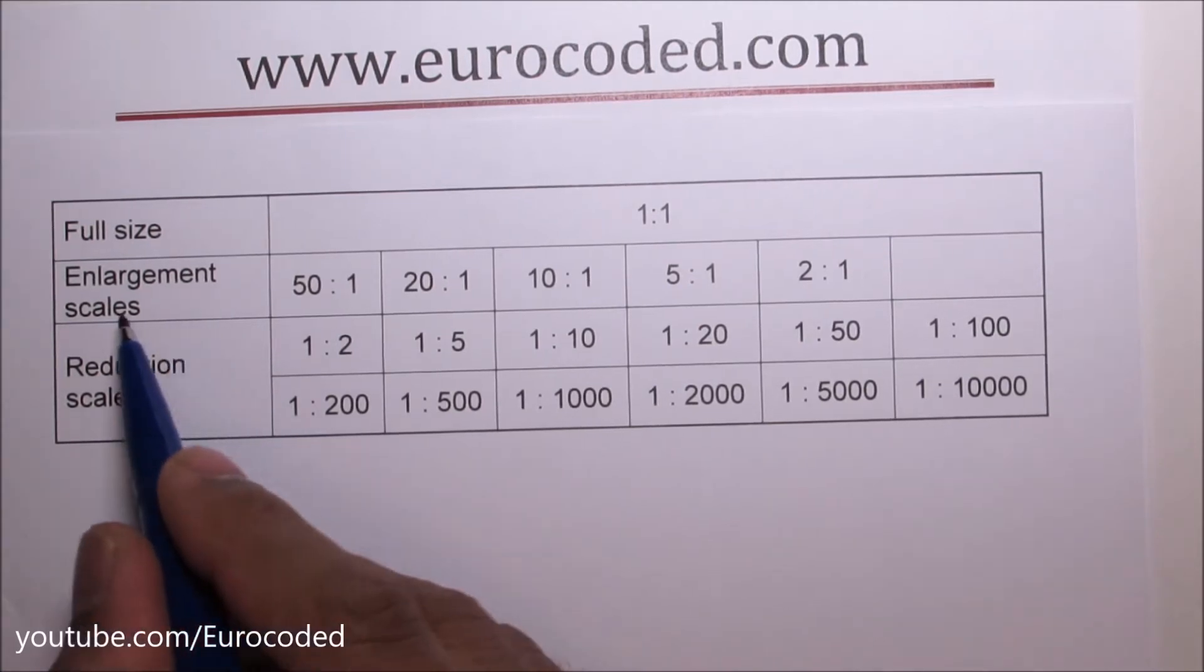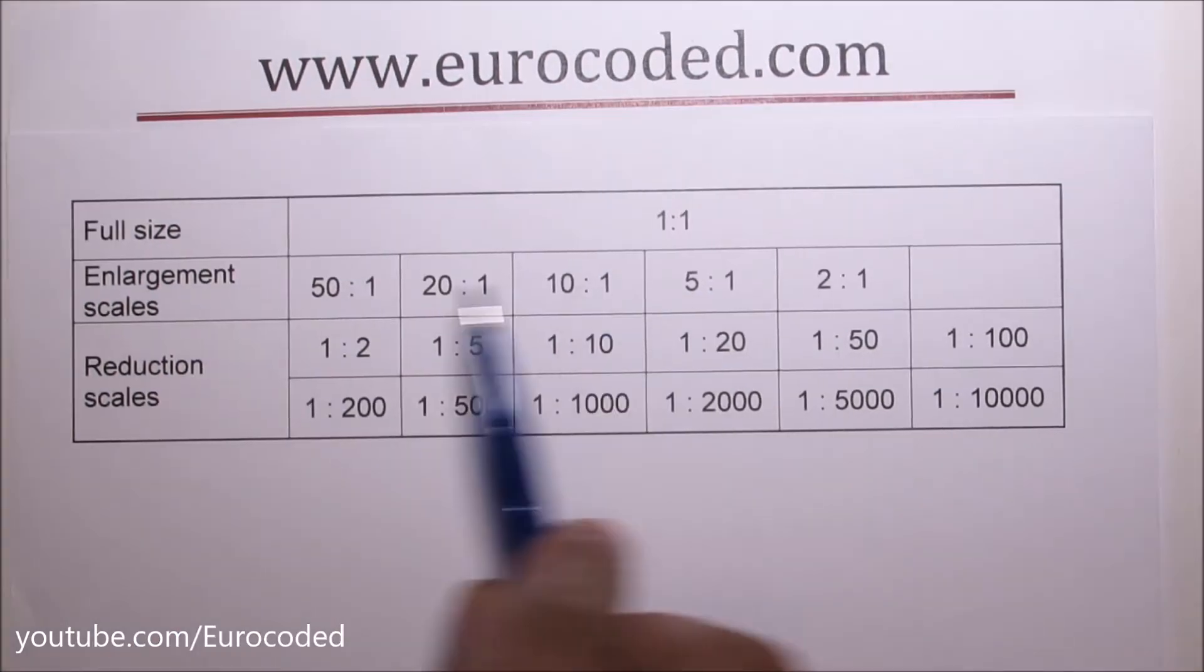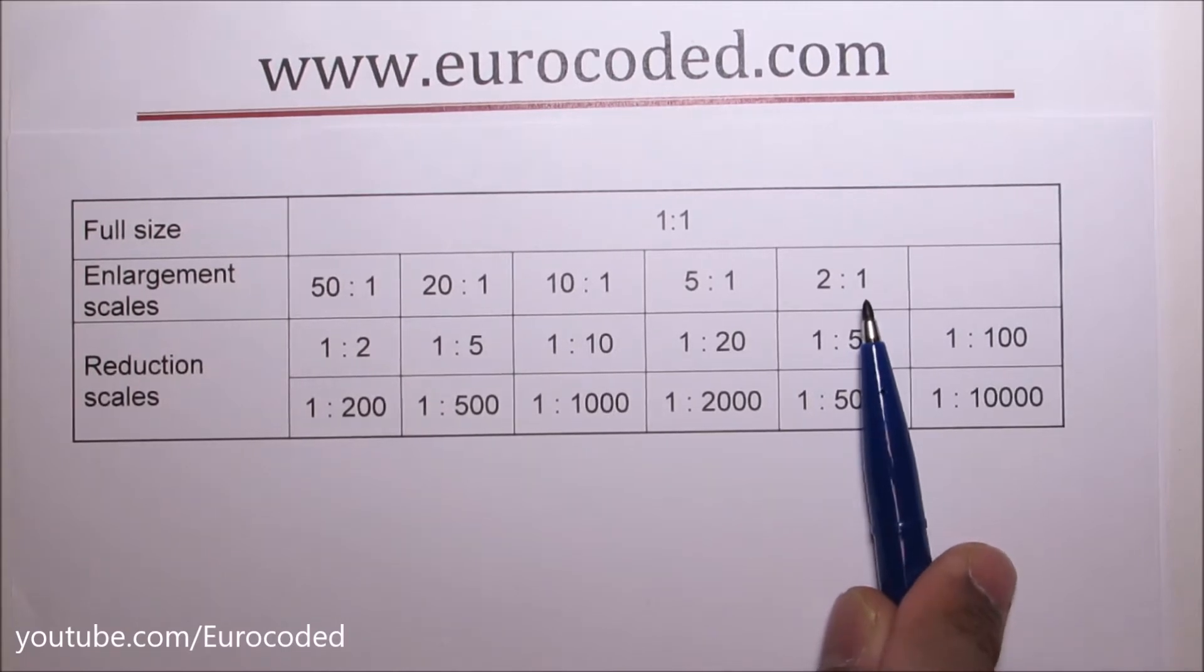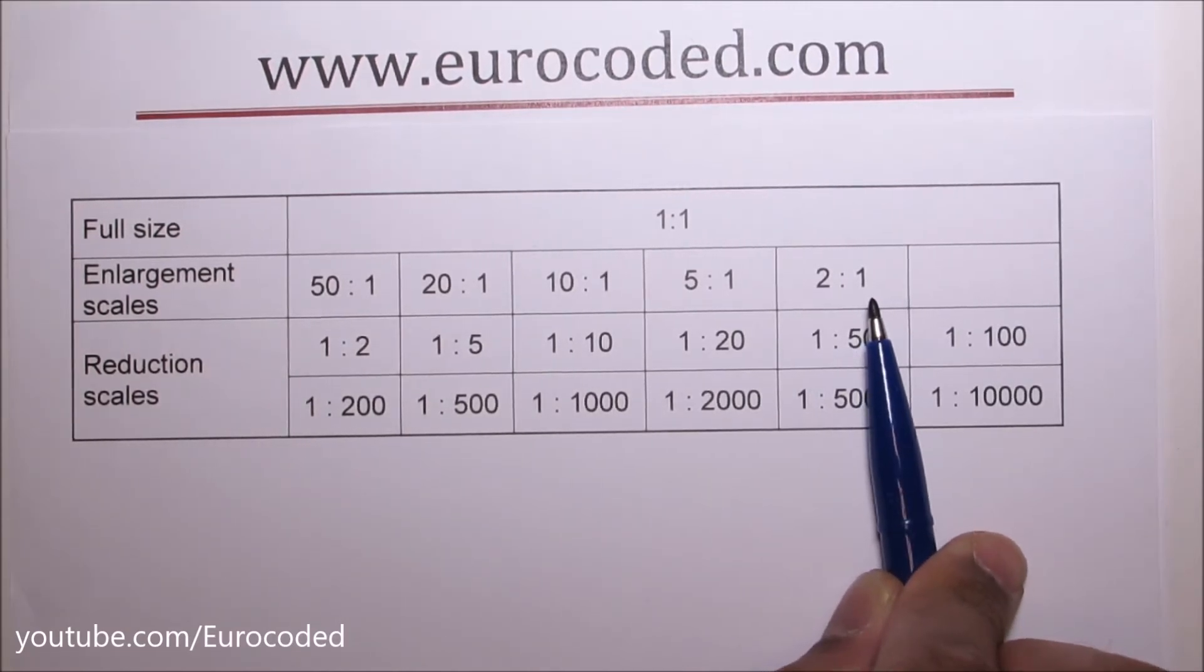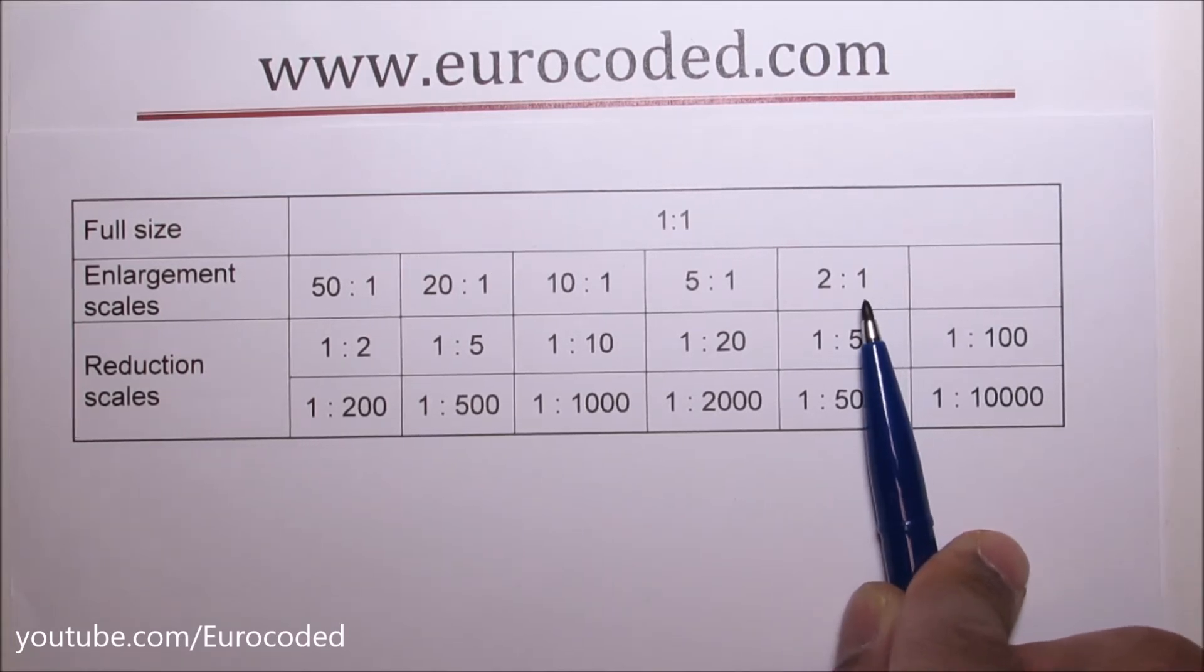The second type is enlargement scales. So if you look at this two to one, that means whatever the unit we are using, two units are representing one unit of the actual element. This is the same element we were looking at before but drawn to two to one scale. If it was drawn to one to one scale it looks like this. If the same element is drawn to two to one scale then it will look like this. If you measure these legs, they should be ten centimeters because the actual element is five centimeters and we have drawn to two to one scale.